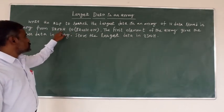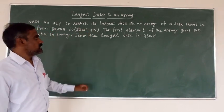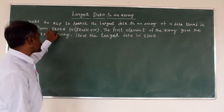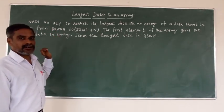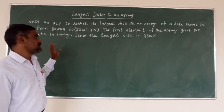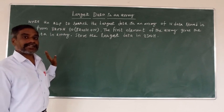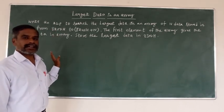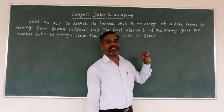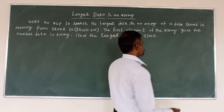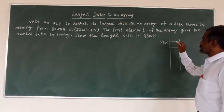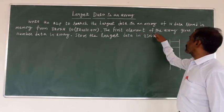Suppose five data means we have to start with address locations 8200 to 8205. The first data of the array at memory location 8200 gives the number of data in the array. Suppose five data means we load 05; ten data means we load 0A; 100 data means we load 64H - that's the corresponding hexadecimal value. Store the largest data in address location 8300.